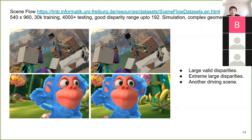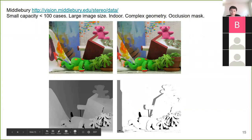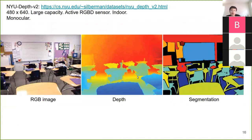The third one is the Middlebury dataset. It's relatively old and the images are relatively large. If you want to evaluate a model on large images with a large range of disparity values, you can use this dataset. They provide training sets and test sets. Training sets have ground truth values and occlusion masks. For monocular related tasks, we have the NYU dataset, which uses an RGBD camera to get the true depth of the scene, though the true depth quality is limited by the underlying sensor.